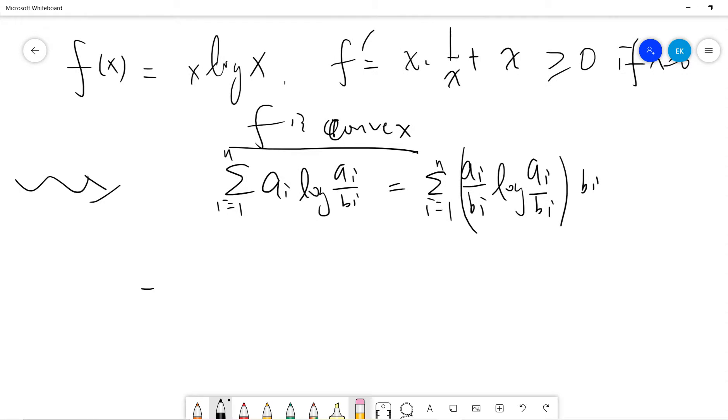So this guy, this guy is basically sum bi f(ai/bi) from i=1 to n. And this is sum bi from i=1 to n times (bi/b) times f(ai/bi).